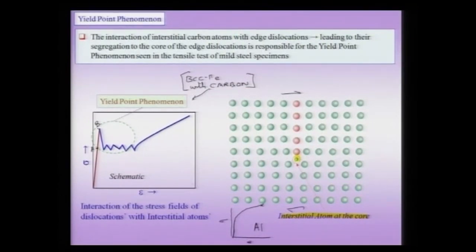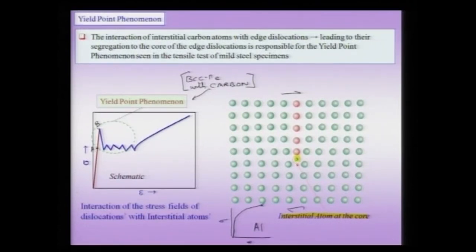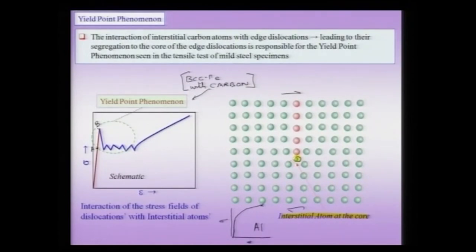To summarize: for pure iron, the elastic-to-plastic transition takes place at lower stresses. Due to the presence of carbon, the carbon is attracted towards the lower half of the extra half plane — regions of higher free volume in the tensile region of the edge dislocation. This segregation by diffusion leads to the Cottrell atmosphere, implying that extra stresses must be applied above what would be expected for a pure material. This is the yield point phenomenon — the locking of the dislocation by carbon atoms — a direct consequence of the interaction of an edge dislocation with the interstitial carbon atom.